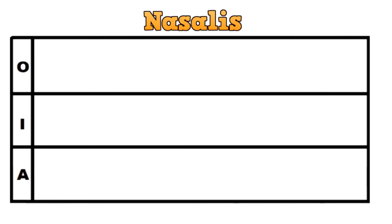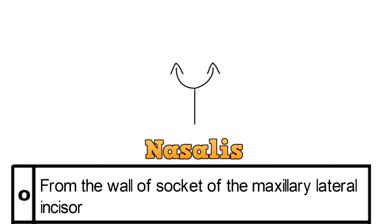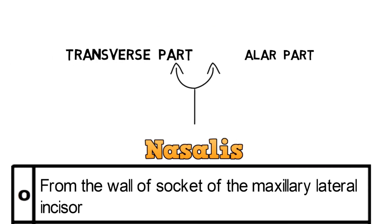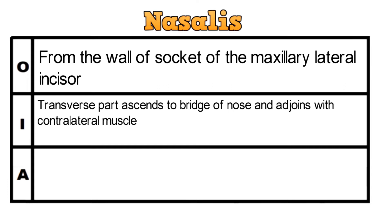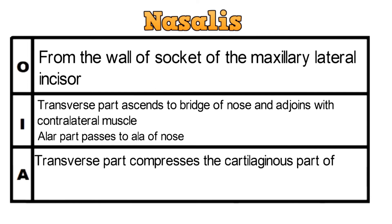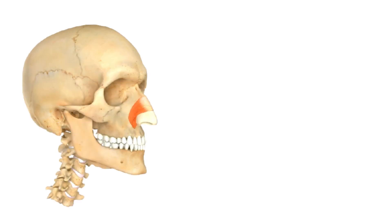The next muscle is the nasalis. It originates from the wall of the socket of the maxillary lateral incisor. This muscle has two parts: the transverse part and the alar part. The transverse part ascends to the bridge of the nose and adjoins with the contralateral muscle. The alar part passes to the ala of the nose. The action of the transverse part is to compress the cartilaginous part of the nose, and the alar part draws the ala downwards. This is the transverse part which adjoins the contralateral part, and this is the alar part.